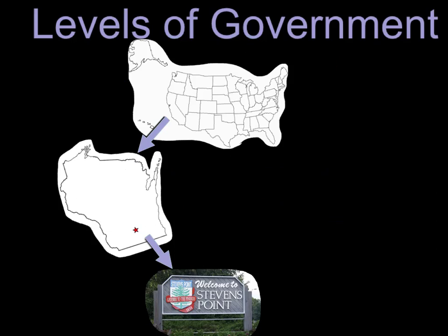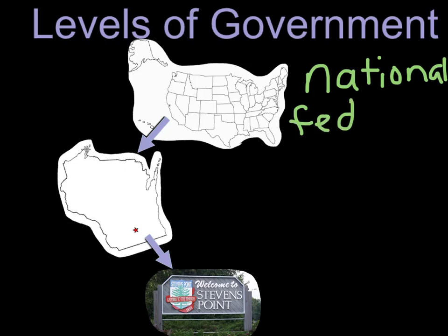What we see here are visual representations of the three levels of government. On top, we see the United States of America, which is our country. When we're talking about levels of government, we use the term national government or federal government. If you hear 'national' or 'federal,' they both pertain to entire countries.